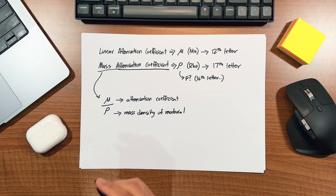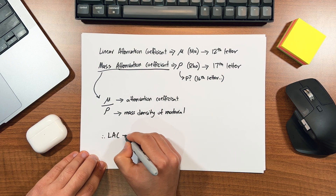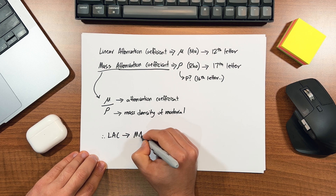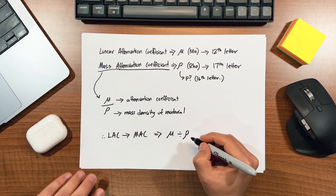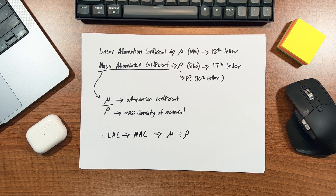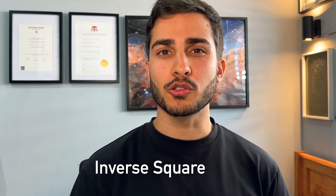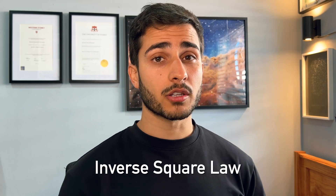We can simply go from linear to mass attenuation coefficient by dividing mu by the density of the attenuator, rho. That's it for this short explainer — if you found any value from this, please give it a like. In the next video I'll be talking about the inverse square law, so click here to watch that. Stay curious.